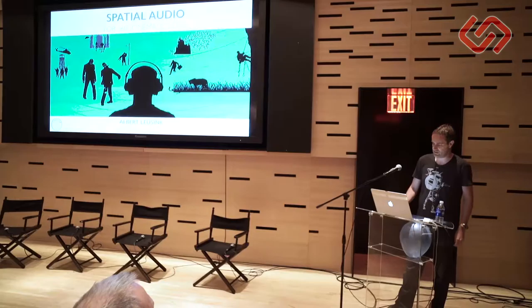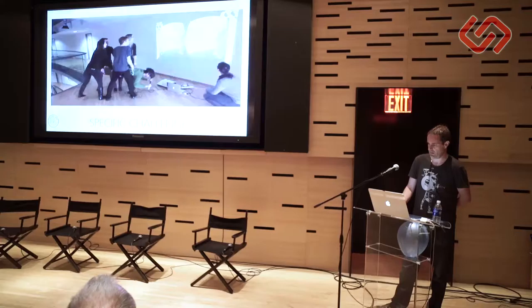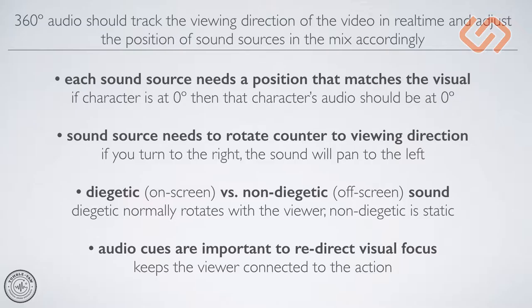We're going to start with specific challenges that we face doing audio for VR. As the video allows us to look everywhere - up, down, behind - we also need audio that will sound like it's coming from all directions: horizontal, which is the horizontal plane front/back/left/right; vertical, up/down; and we can also hear distance - is the sound close or far? Another challenge is it should track the viewing direction of the video and adjust the position of the sound in real time, so each sound source needs a position that matches the visual, and the sound source needs to rotate counter to the viewing direction.